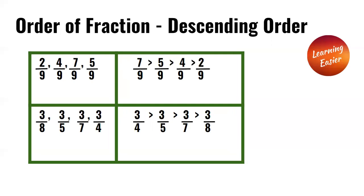Order of fractions — descending order. Here we have two over nine, four over nine, seven over nine, and five over nine. Since we have the same denominators for all the fractions, we compare the numerators. In descending order, we go from the largest to the smallest.